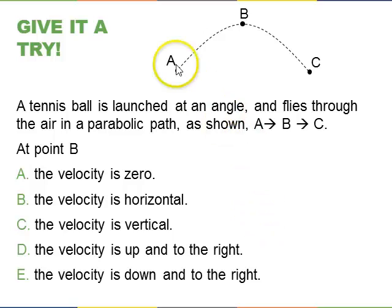So let's give it a try. Here is a parabolic path of a tennis ball, which is launched at some initial angle, and it flies between points A, B, and C. So, point A is just after it's been hit, and C is just before it hits maybe the ground or the net or something like that. So at point B up here is the velocity zero, is the velocity horizontal, is the velocity vertical, D is the velocity up and to the right, or E is the velocity down to the right. So please pause the video, think about it, and then resume.